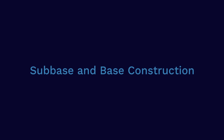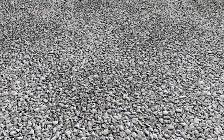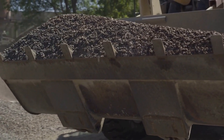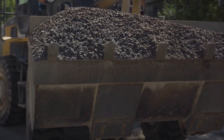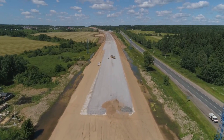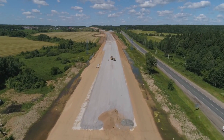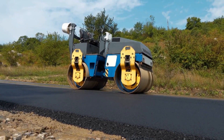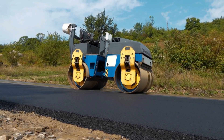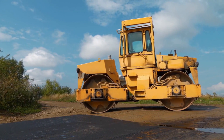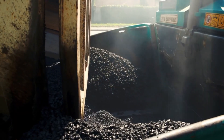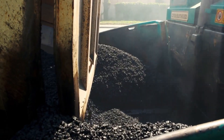Subbase and Base Construction: After the earthwork, a subbase layer is added. This layer typically consists of compacted gravel or crushed stone. It provides further stability, drainage, and a solid base for the road. On top of the subbase, a base layer is constructed using materials like crushed stone or asphalt. The base layer adds strength and stability to the road.